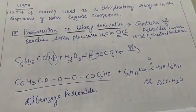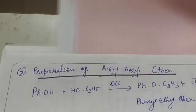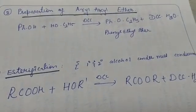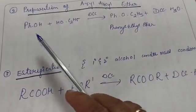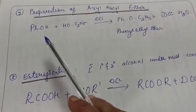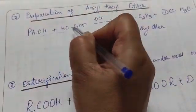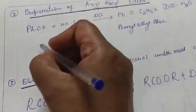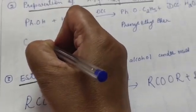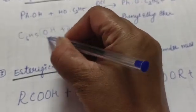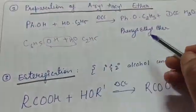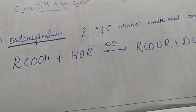The second application is the preparation of aryl alkyl ethers. Ethers are mostly prepared by dehydration of alcohols or phenols. For example, C6H5OH plus C2H5OH, in the presence of DCC with water removal, gives phenyl ethyl ether C6H5-O-C2H5. This is a very simple reaction.